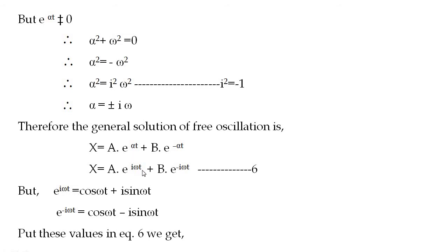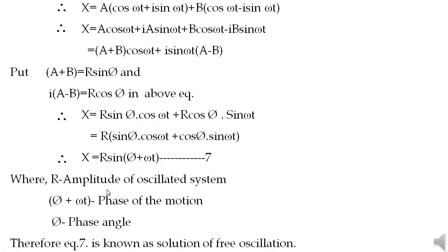Using Euler's formula: e^(iωt) = cos(ωt) + i·sin(ωt) and e^(−iωt) = cos(ωt) − i·sin(ωt). Substituting into equation 6: x = A[cos(ωt) + i·sin(ωt)] + B[cos(ωt) − i·sin(ωt)]. Expanding: x = A·cos(ωt) + iA·sin(ωt) + B·cos(ωt) − iB·sin(ωt).